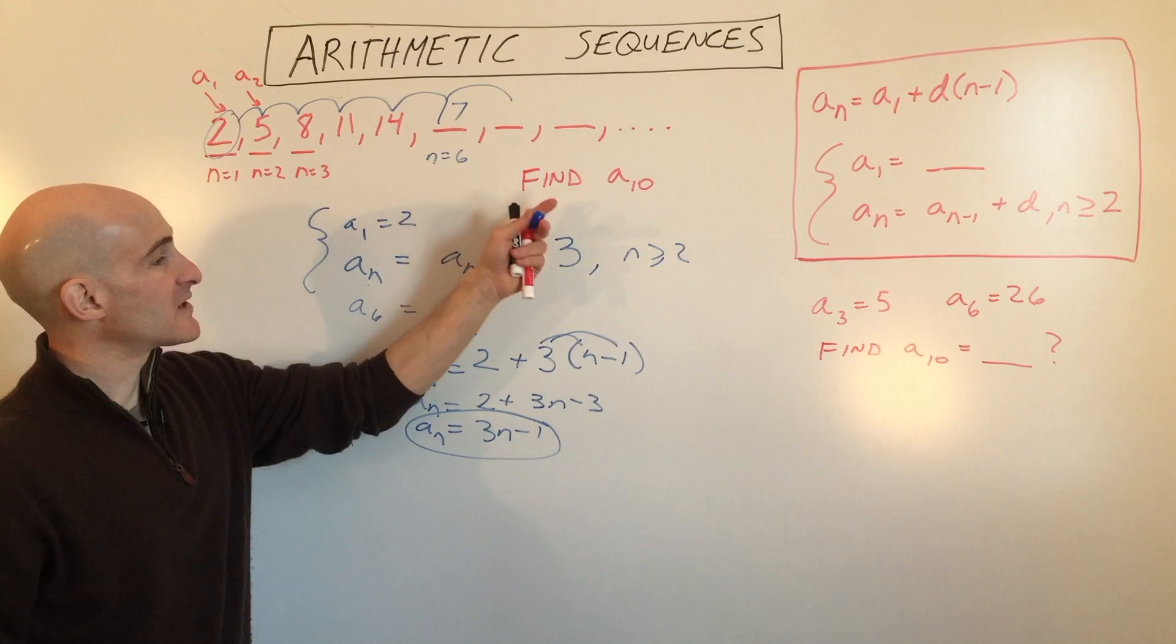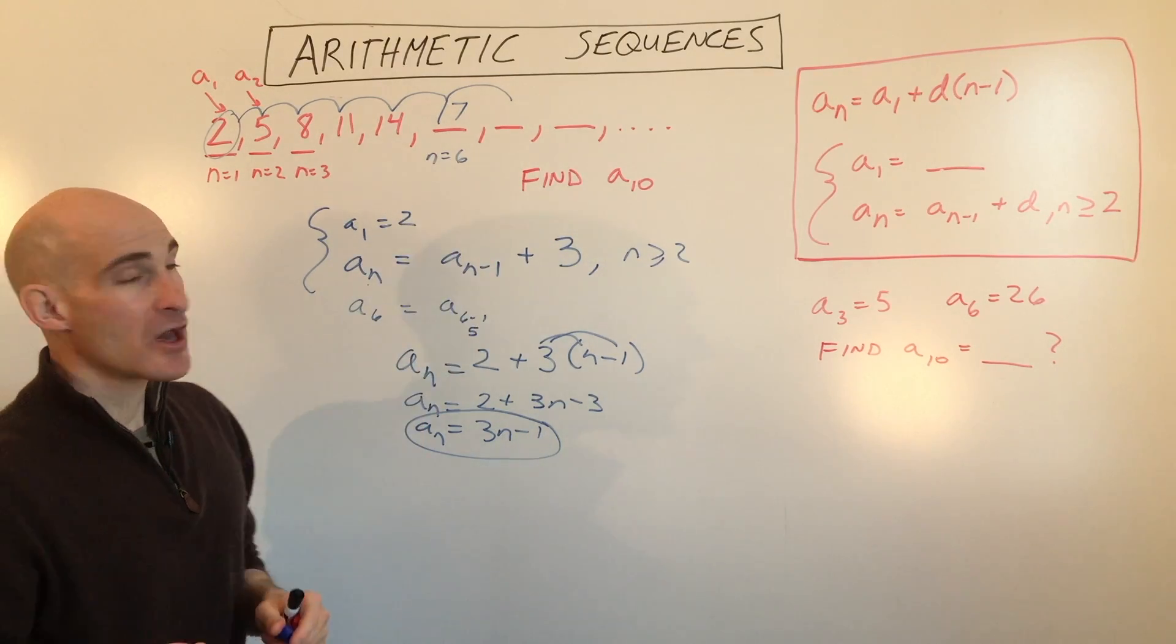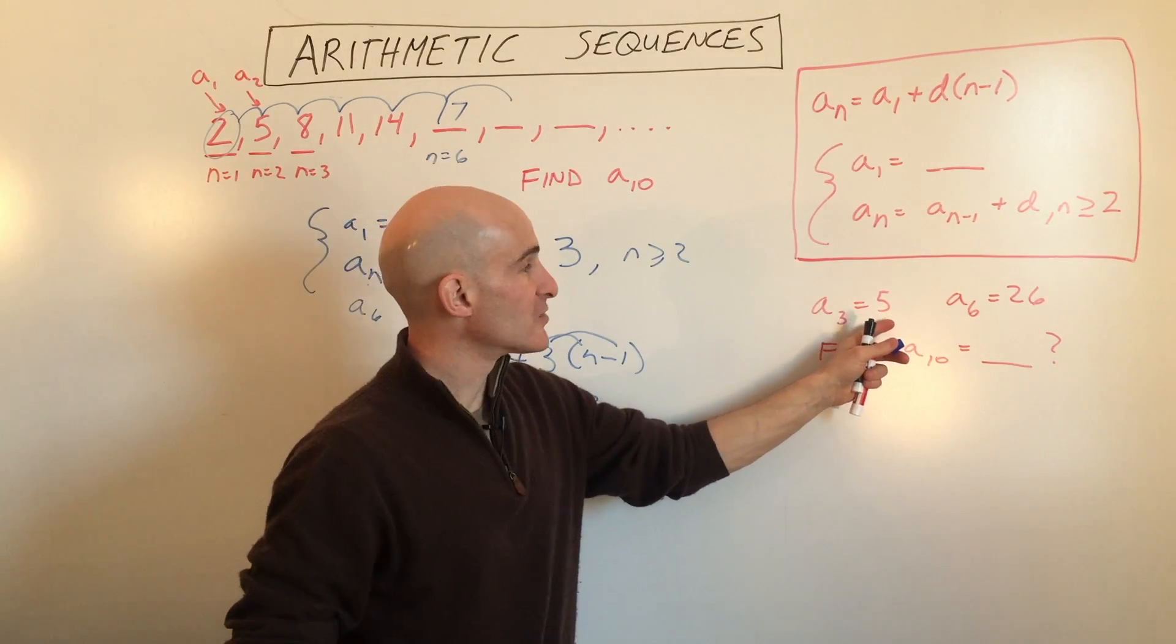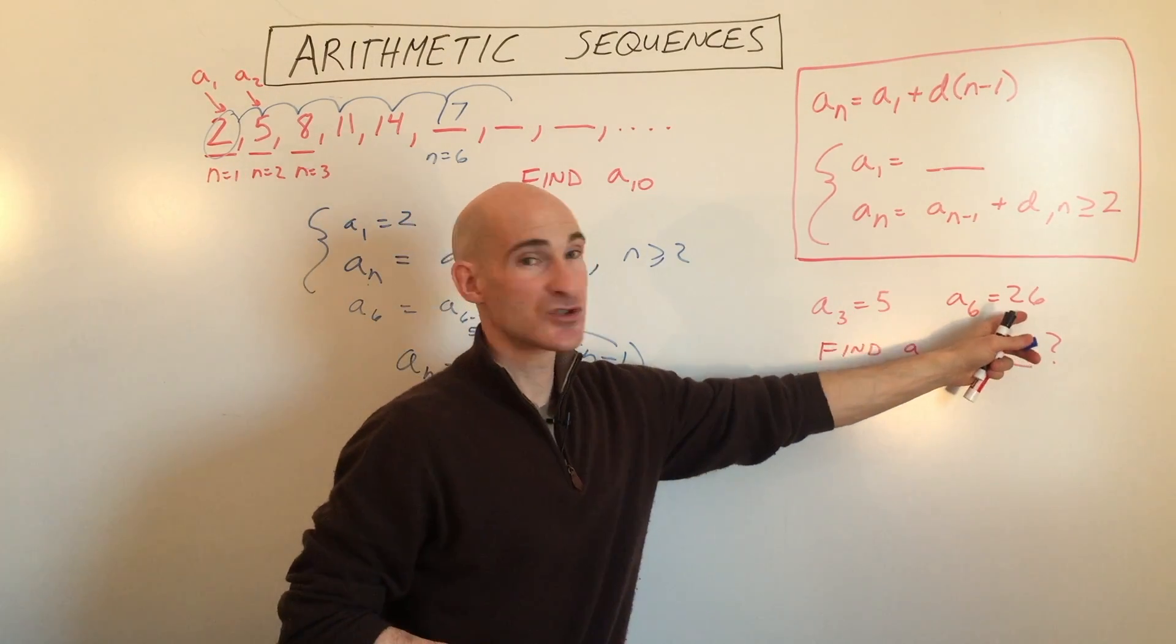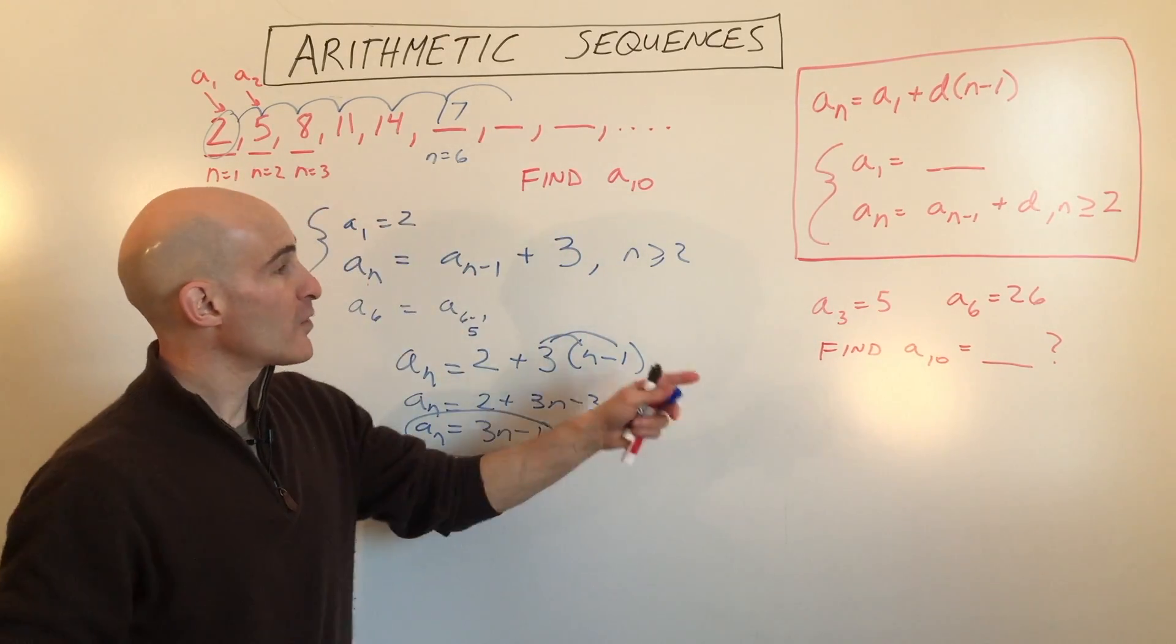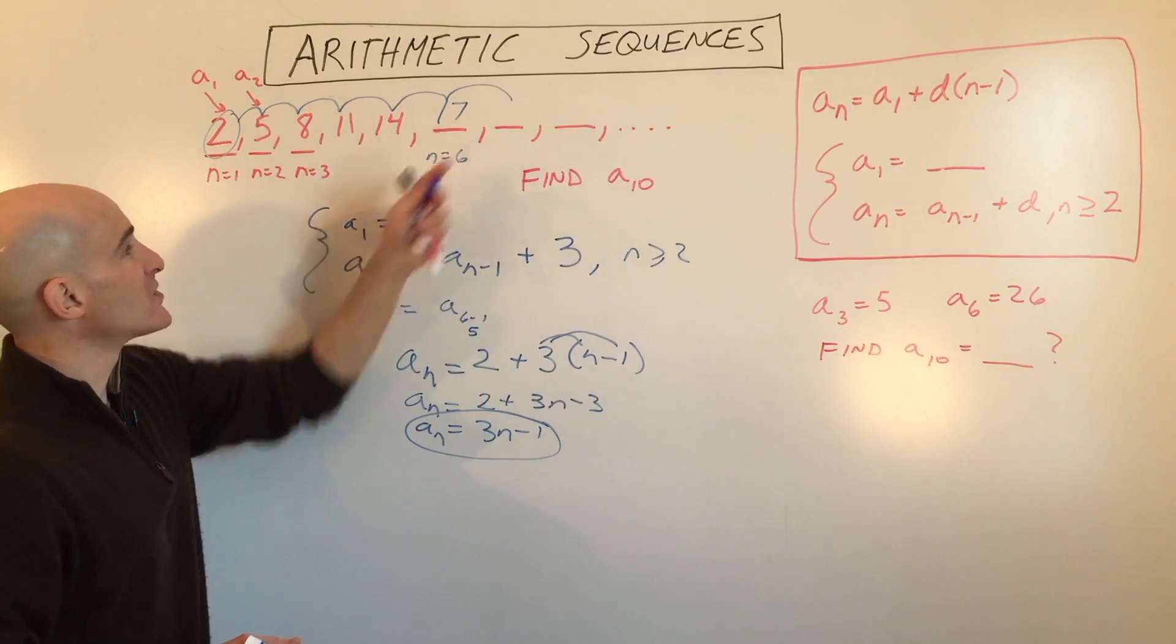So this is working with arithmetic sequences. I want to show you another example, a little bit more challenging example, and that's this one over here. a sub 3 equals 5. a sub 6 equals 26. How do you find a sub 10, which is the 10th term? Well, before we get into that, I want to show you with these ones right here.